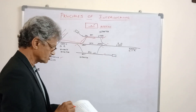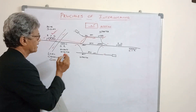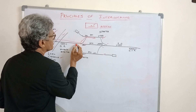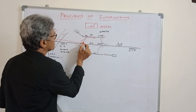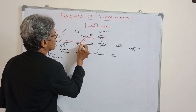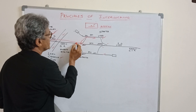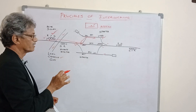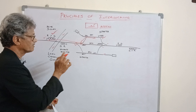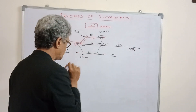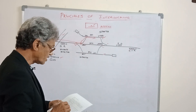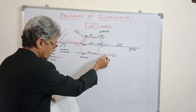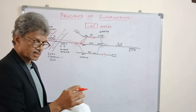Coming to facing points — what do we mean by a facing point? If we approach a point where diverging takes place from one line to another line, that junction we call a facing point. All facing points must be locked. All trailing points may or may not be locked — that is a different story.